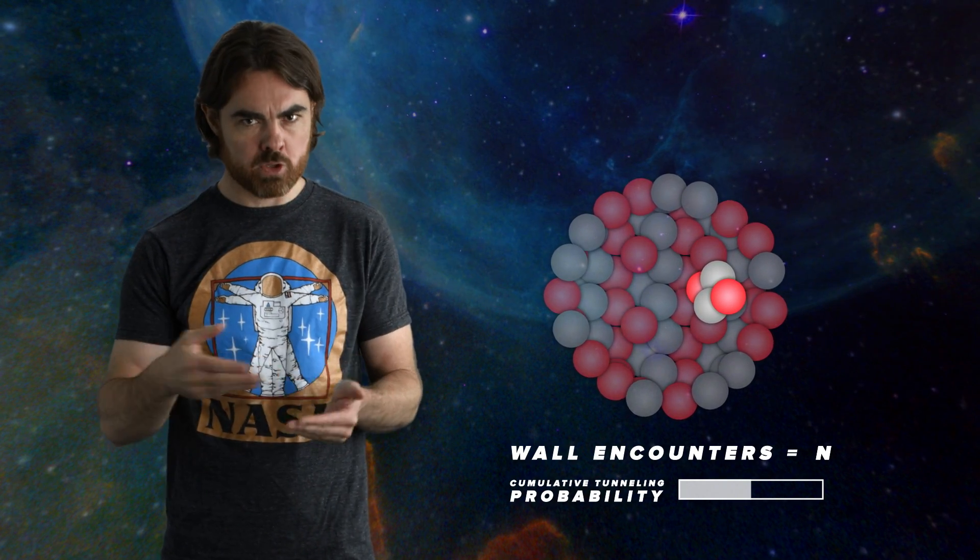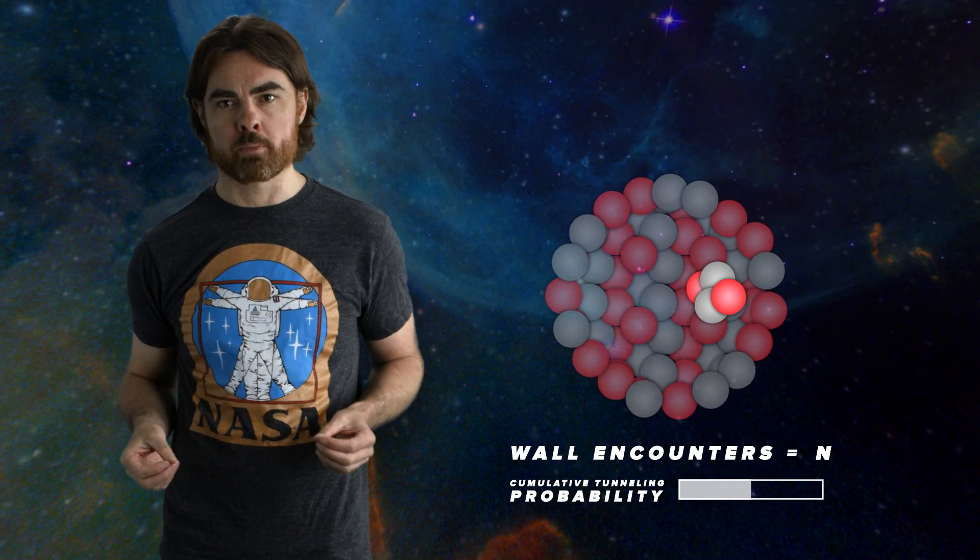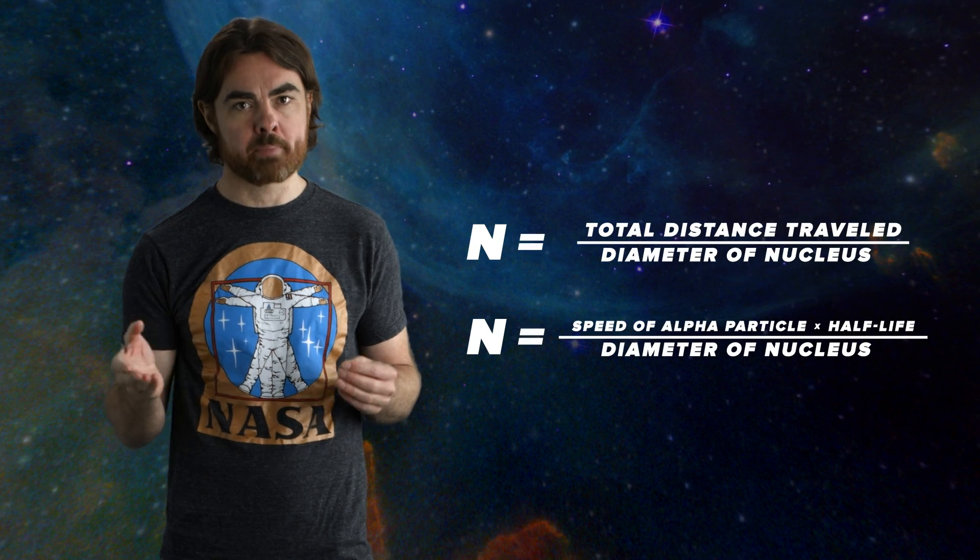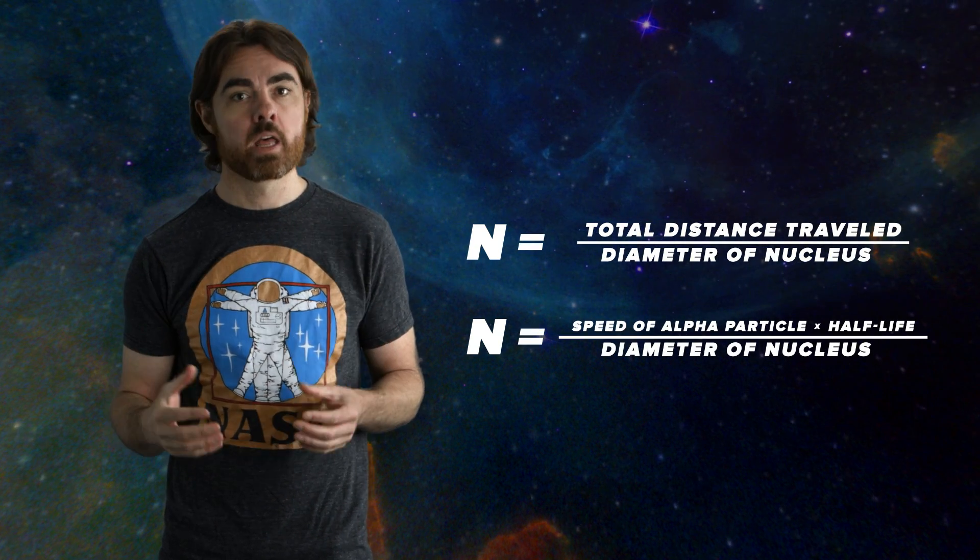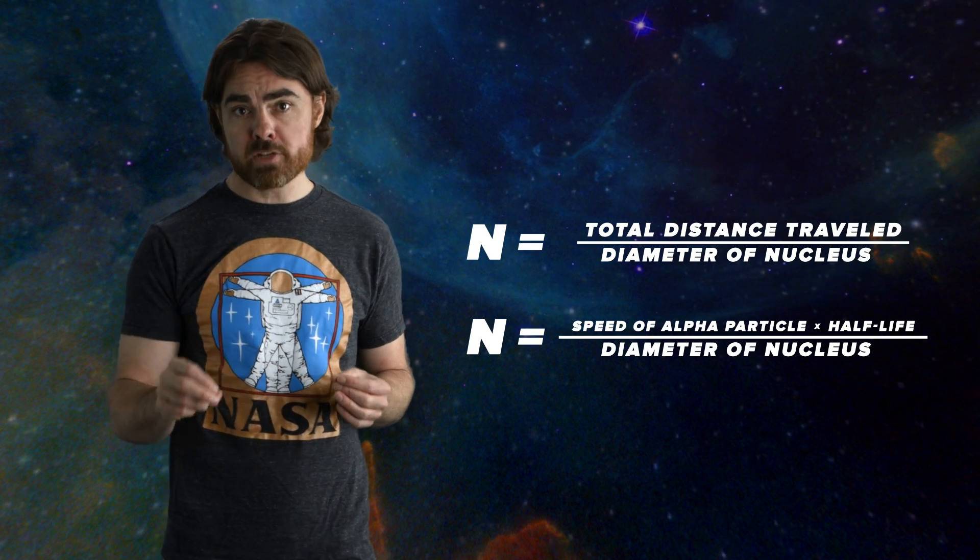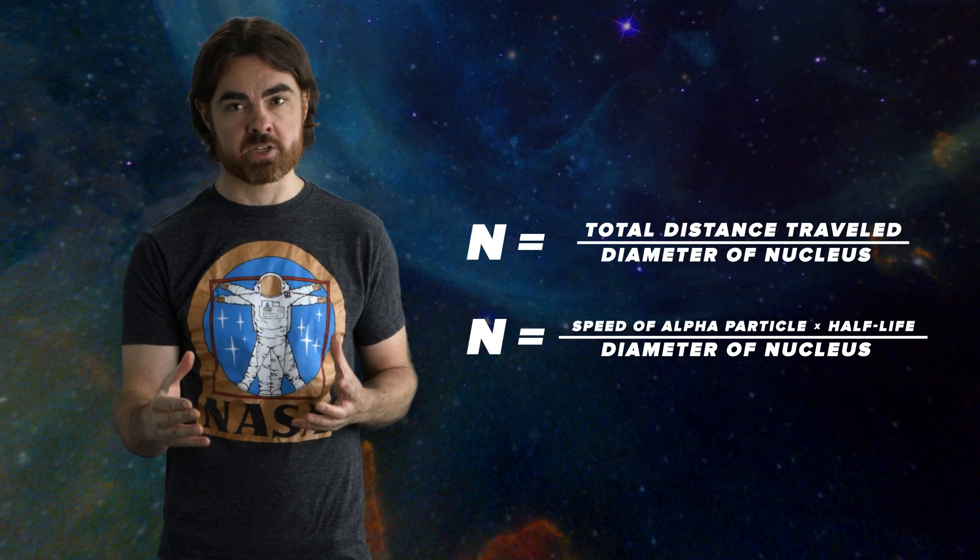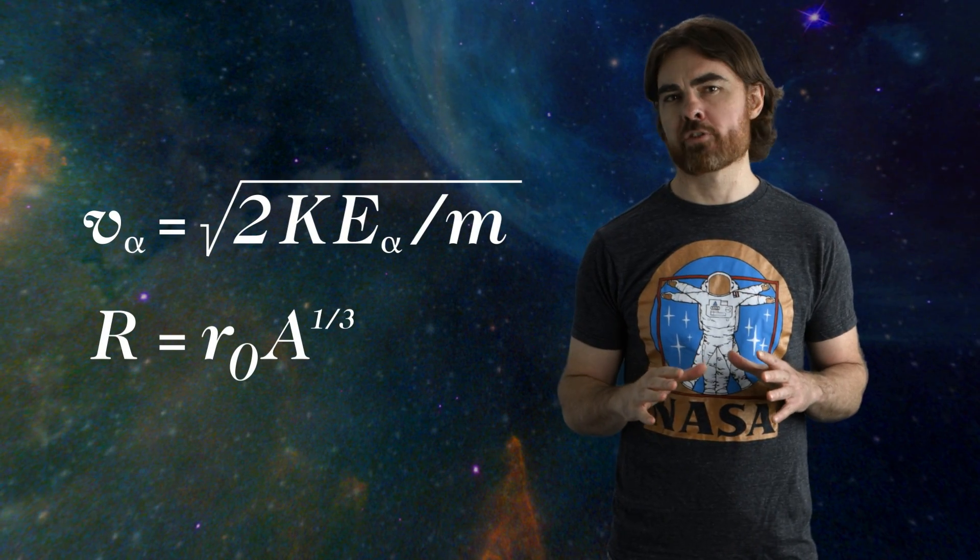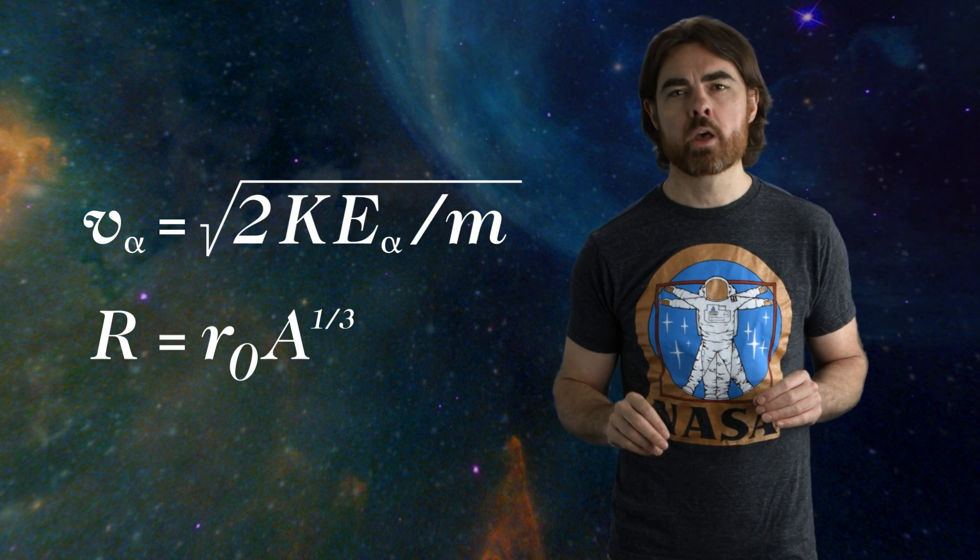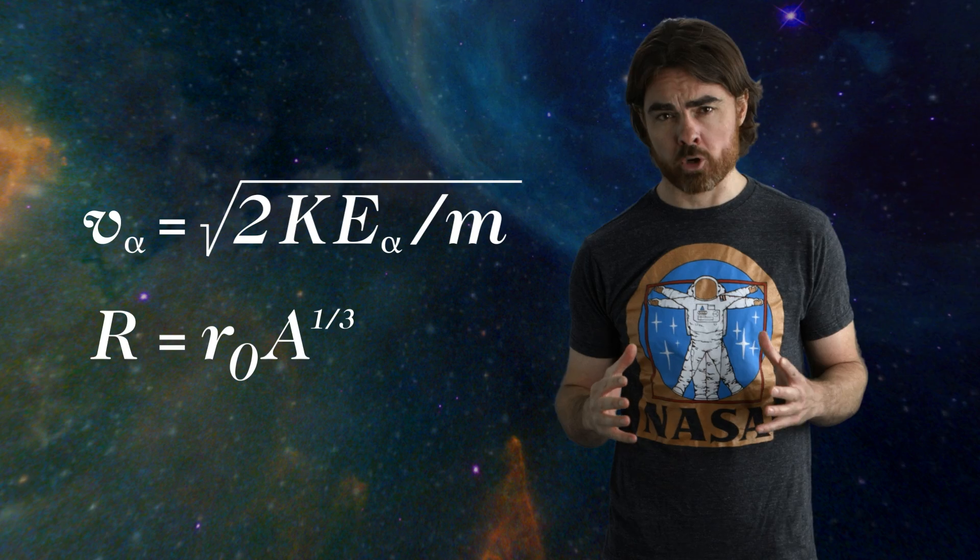All those individual probabilities combine to give you a 50% chance of decay after 0.3 microseconds. To do this, you needed to assume that the alpha particle bounced back and forth between the walls of the nucleus with a constant velocity. That, combined with the size of the nucleus, gives you the number of encounters with the wall, and so the number of tunneling chances in that 0.3 microseconds. You get the alpha particle velocity from its kinetic energy, which I gave you, and you get the size of the polonium nucleus from the nucleus-size relationship of the Fermi model.